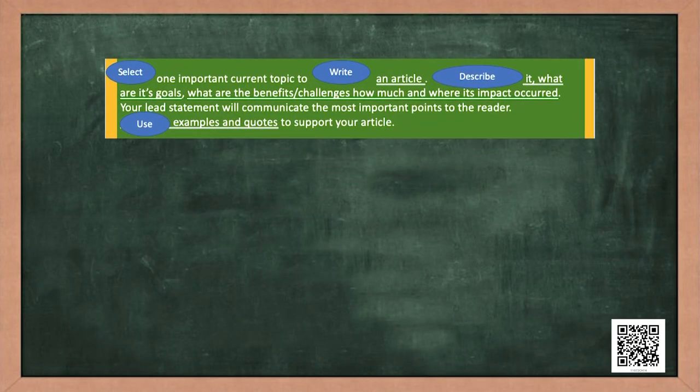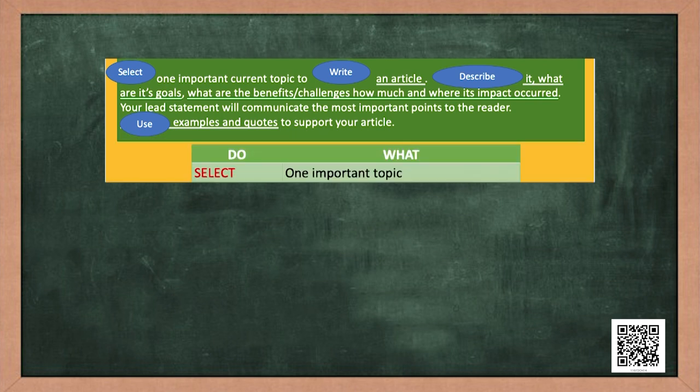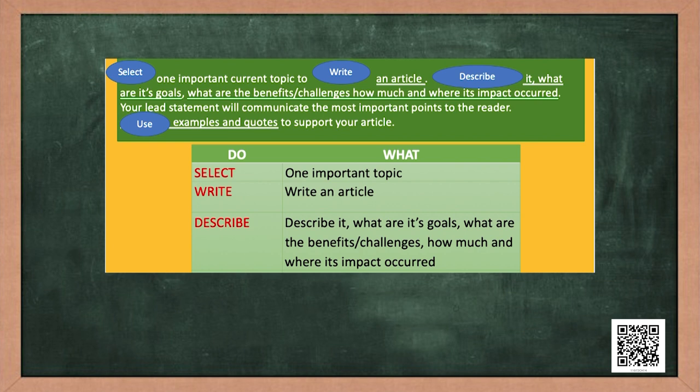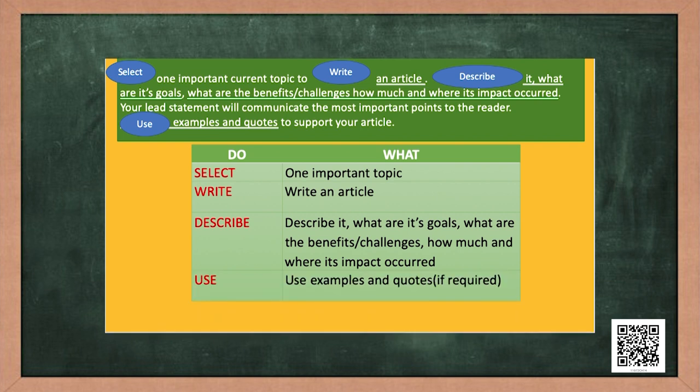Let us look at a question. I want you to pay attention to the verbs — you can circle them and underline what it is that you have to do. We call it making a 'Do-What' chart. So in a Do-What chart, if you have to select, what is it that you select? One important topic. And you have to write — write an article. And describe — describe its goals, benefits or challenges, and where its impact occurred. And use examples and quotes if required.